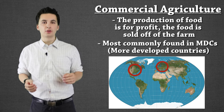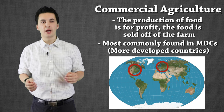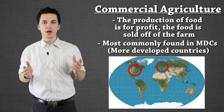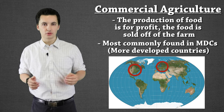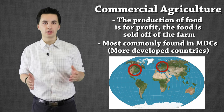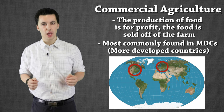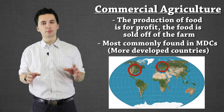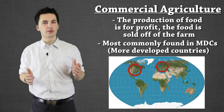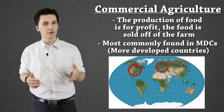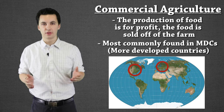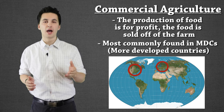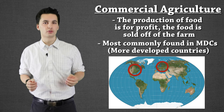On the screen you can see where MDCs, or more developed countries, are highlighted — these are the regions that primarily use commercial agriculture. Now let's explore what these different types mean with regards to life on the farm and how agriculture is used.